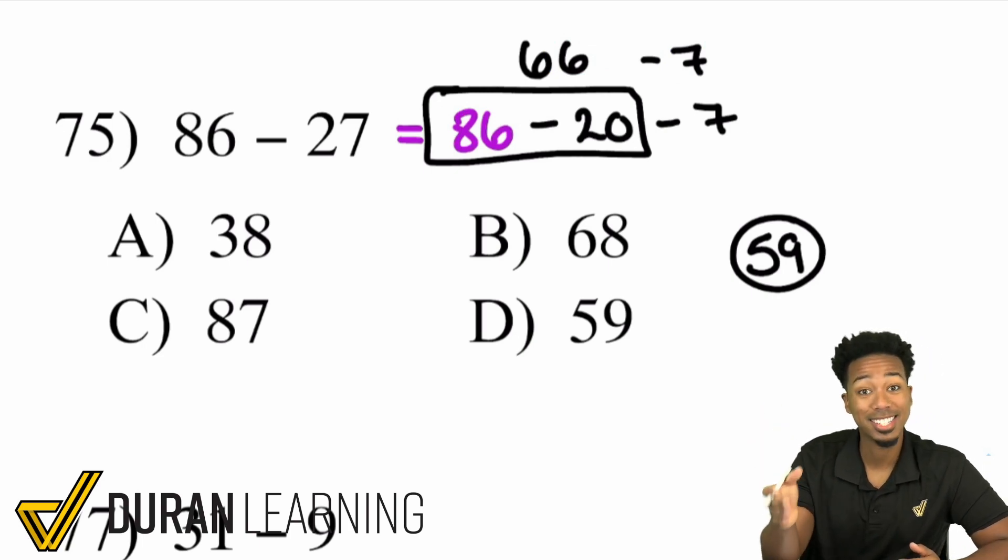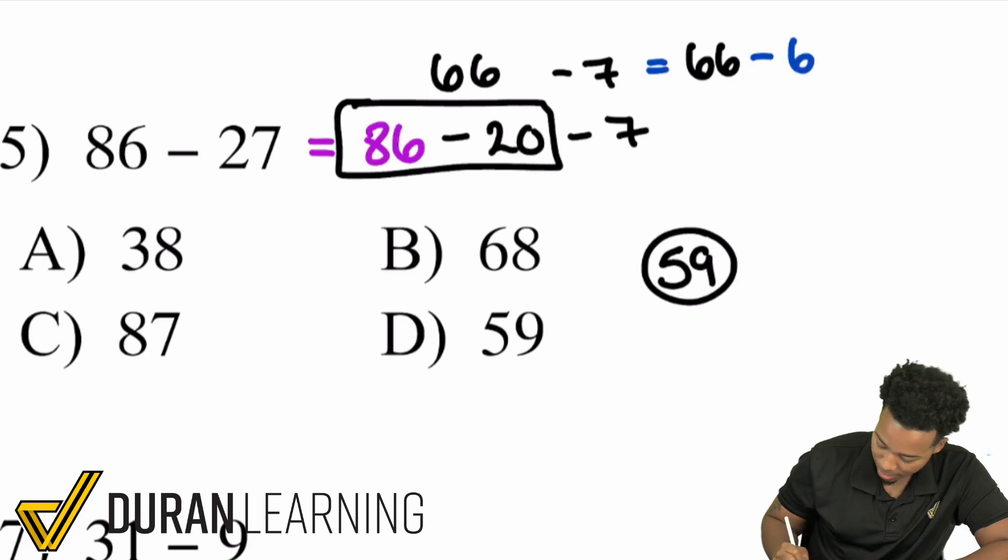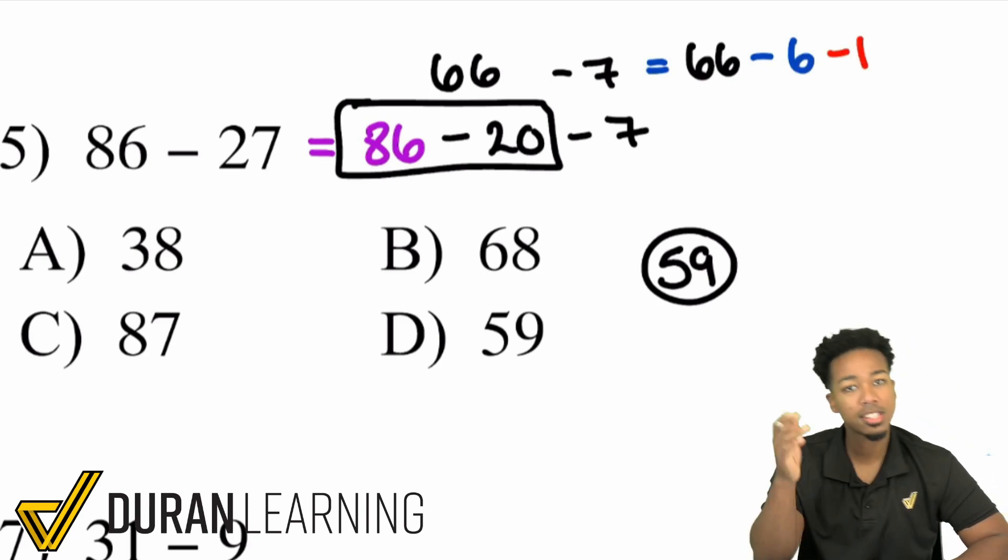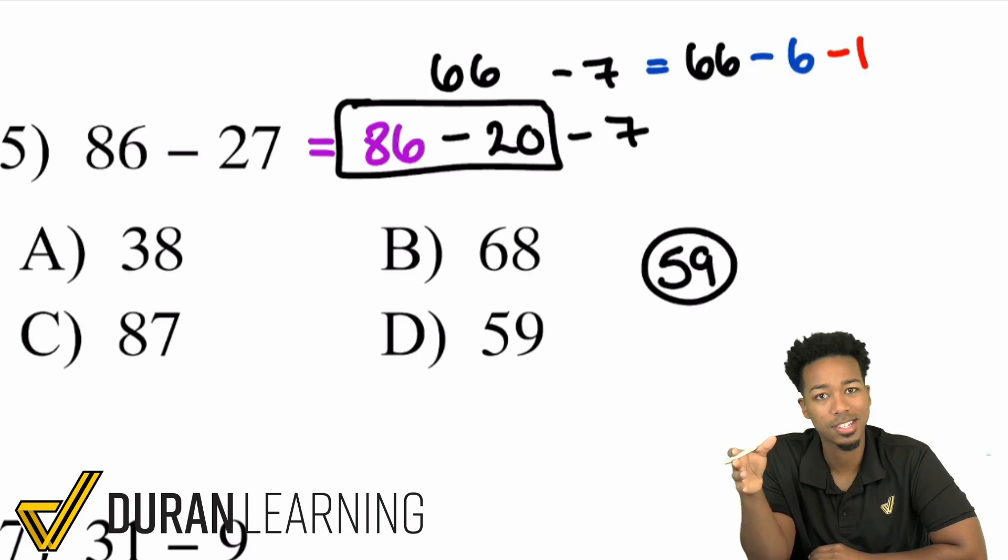You can think of 66 minus 7 as 66 minus 6 and then minus 1. Because think of it if you're taking away 7 that's the same thing as taking away 6 and then taking away 1.